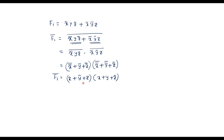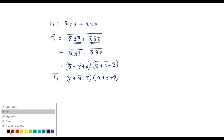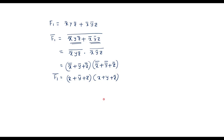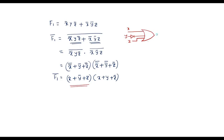Now let me draw the circuit using basic gates. For the first term (x plus ȳ plus z) we need a three-input OR gate. One input is x directly. The second input is y passed through an inverter to get ȳ. And the third input is z. So this represents the first term x plus ȳ plus z.